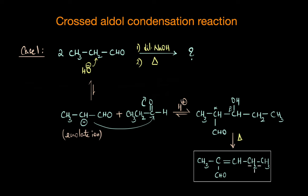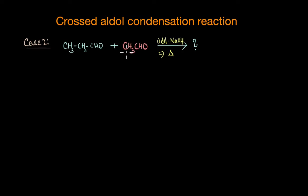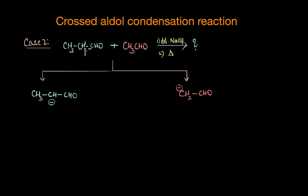This is nothing new — you are already familiar with the classic aldol condensation reaction. But what about the second case? In the second case we have two different aldehydes, both of which have alpha hydrogen atoms. That means both of these aldehydes can form enolate ions in the presence of a base. Propanal gives CH3CH-CHO and acetaldehyde in the presence of dilute NaOH gives this particular enolate ion.